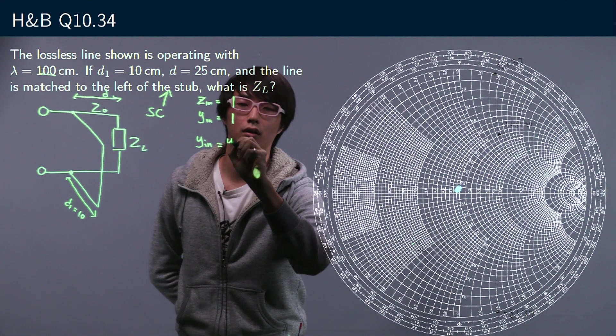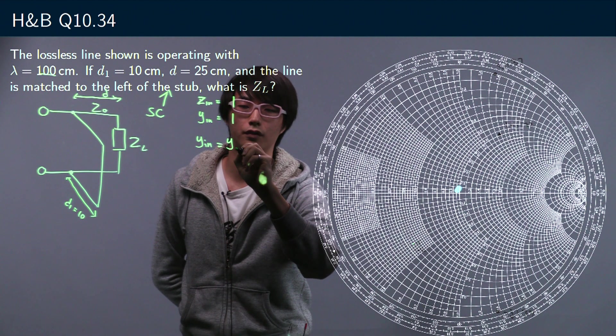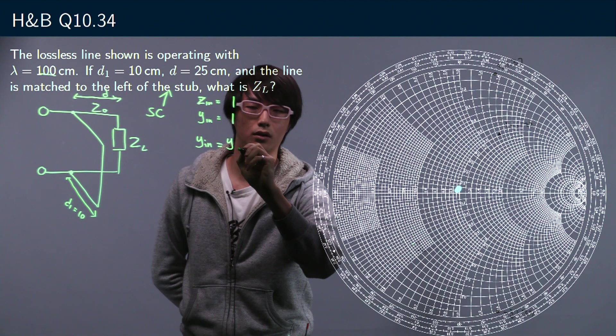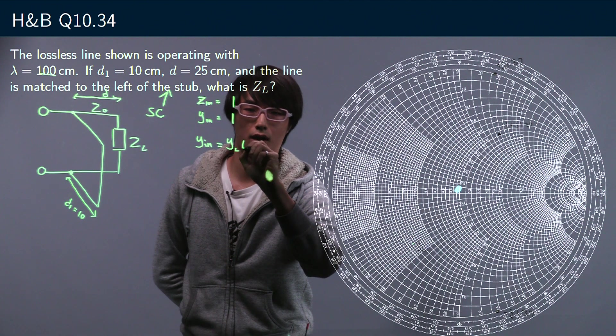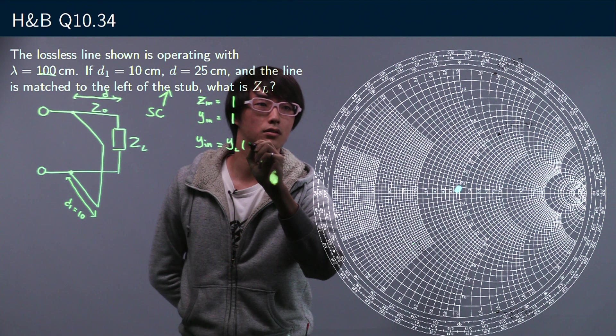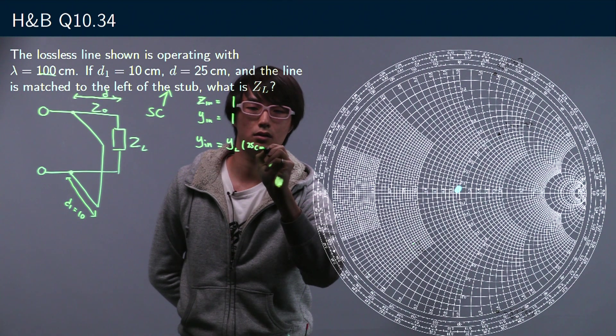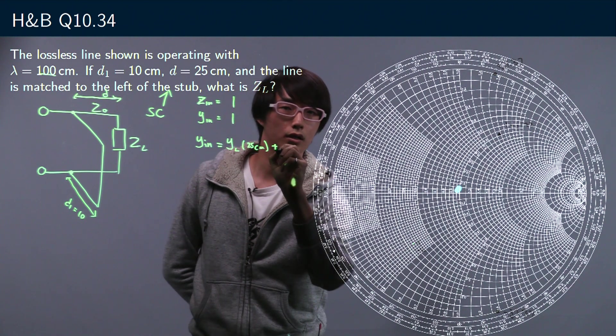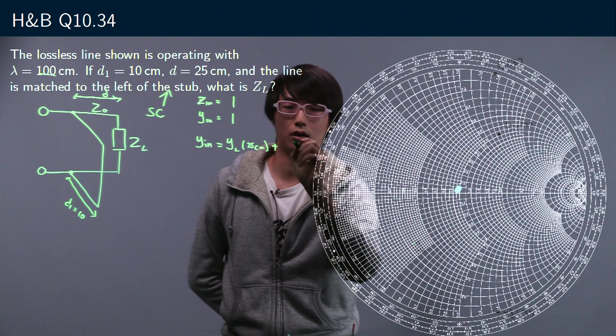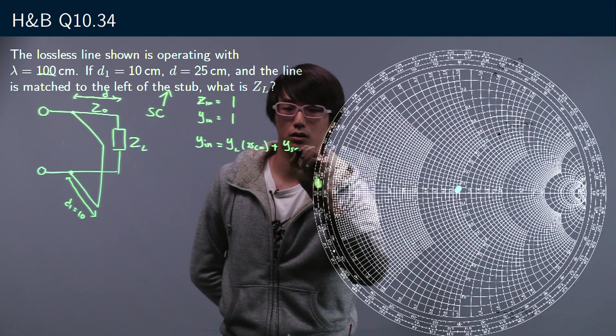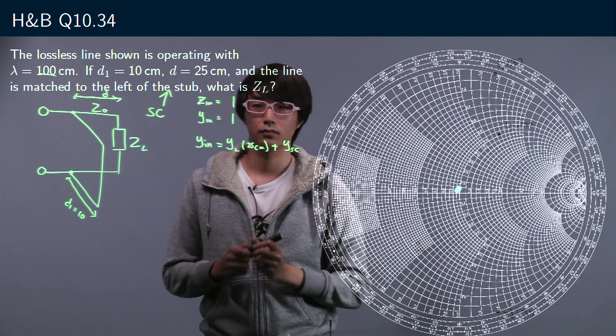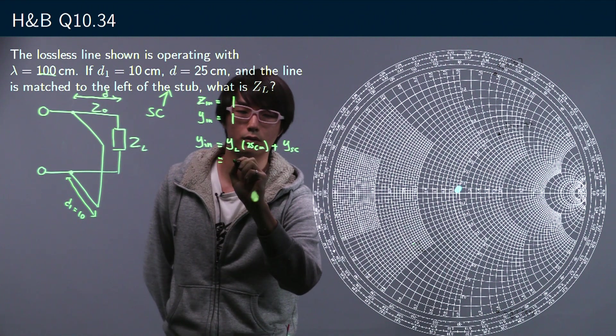So this input admittance is equal to the input admittance of the load at the distance 25 centimeters plus the contribution of our short circuit stub. And that equals one.